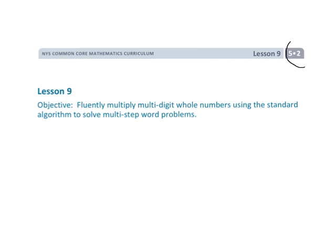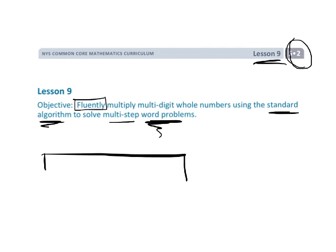This is 5th grade, Module 2, Lesson 9. The big keyword is fluently multiplying multi-digit numbers using the standard algorithm to solve multi-step word problems. It's these word problems that means we're probably going to end up using tape diagrams to try and explain the meaning behind the math we're about to do. So let's get working.